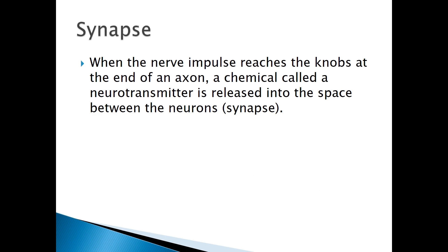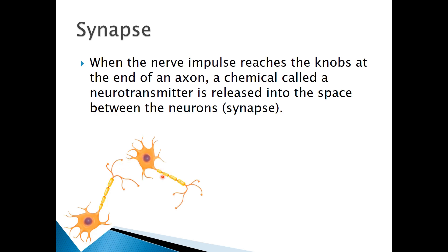Let's get a little more technical and look at how neurons actually talk to each other — how does a signal get from one neuron to the next neuron in the chain? We've got a neuron carrying an electrical signal and passing it on to the next neuron. If we take a closer look at this connection — this junction — we call it the synapse, where the axon terminal of one neuron connects with the dendrite of the next neuron.